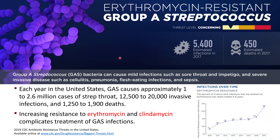This is a slide from the CDC which ranks different resistant organisms based on threat level. For erythromycin-resistant group A strep, this is a level of 'concerning' — one of three levels: concerning, serious, and urgent. Resistance to erythromycin has been increasing year after year, and erythromycin is the surrogate for the entire class of macrolides, so we can consider this resistant to macrolide antibiotics.